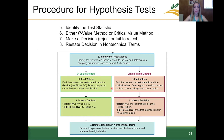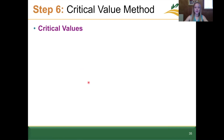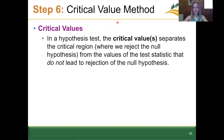Going back to the overview: we just covered finding the p-value within step six. Now we're also going to go through finding the critical value within step six. Keep in mind that either route we had to find the test statistic value first. Let's define what a critical value is: in a hypothesis test, the critical value or values separates the critical region where we reject the null hypothesis from the values of the test statistic that do not lead to rejection of the null hypothesis.